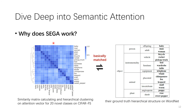Our third question is: why does SEGA work? Here we show the similarity metrics of the generated attention vectors as a hierarchical clustering tree. It makes sense that visually similar categories cluster together. Notably, we do not use WordNet explicitly, but our clustering result is quite similar to the ground-truth hierarchy structure in WordNet.